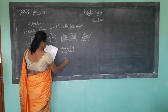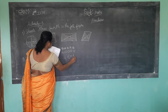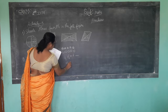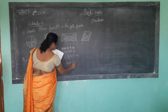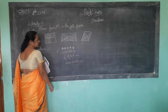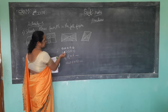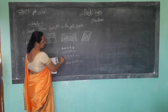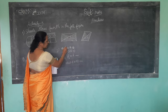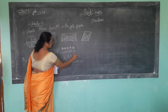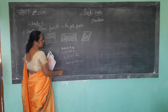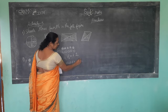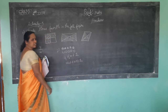Half of ten — half of ten is how much, children? Half of ten means one, two, three, four, five. Ten is there, and half of ten means five. What is ten divided by two? Two ones are two, two twos are four, two threes are six, two fours are eight, two fives are ten. Okay?